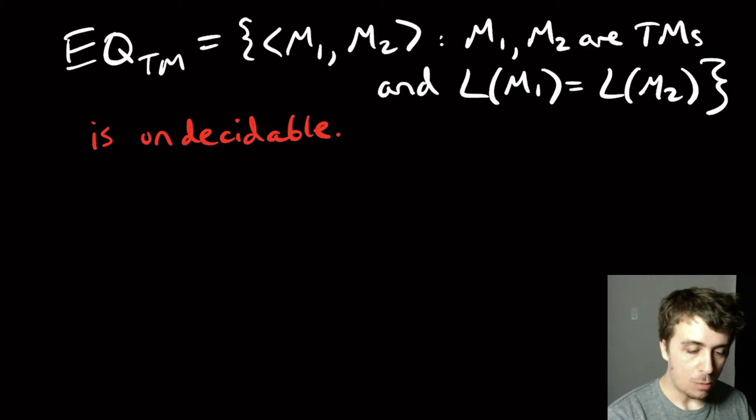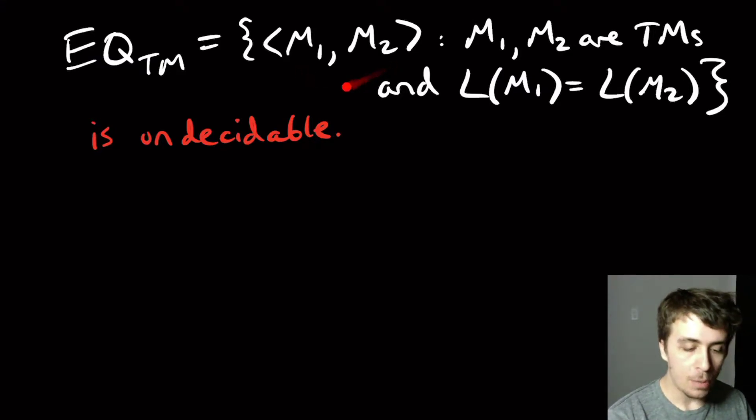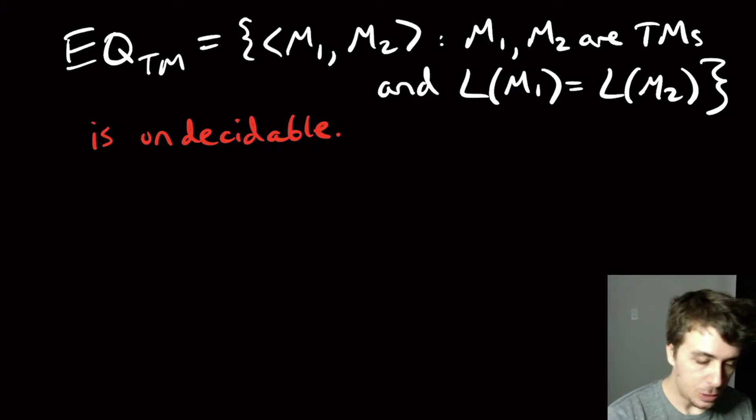The common way of proving that things are undecidable is to assume that they are decidable and then to decide a known undecidable problem, or to use Rice's theorem. But we can't use Rice's theorem here because there are two Turing machines instead of one. So we need to assume that this thing is in fact decidable.